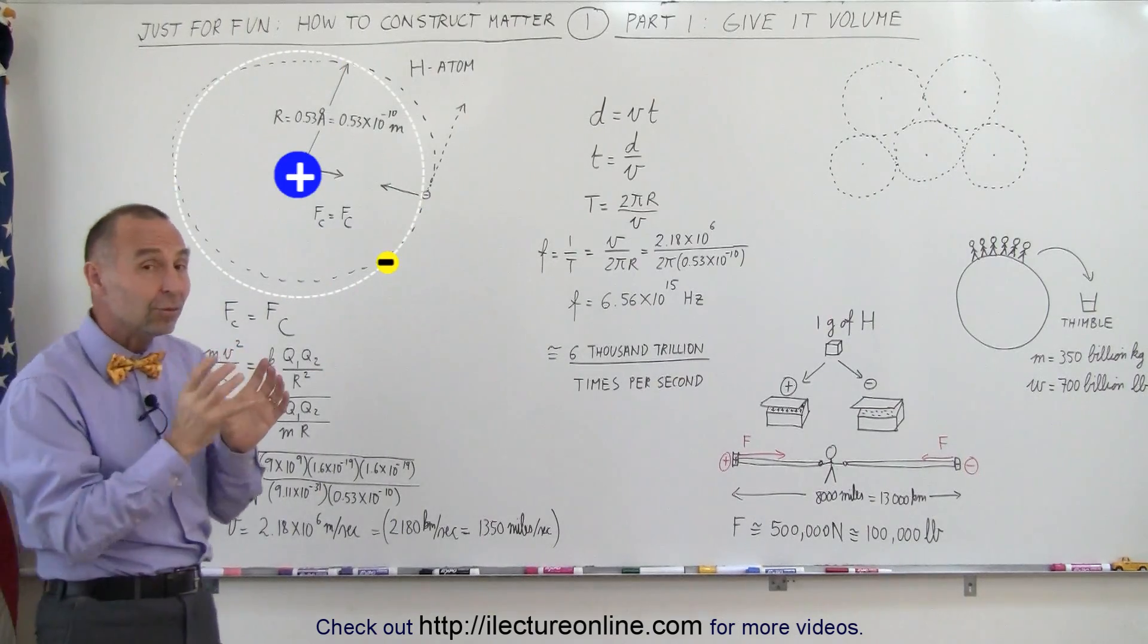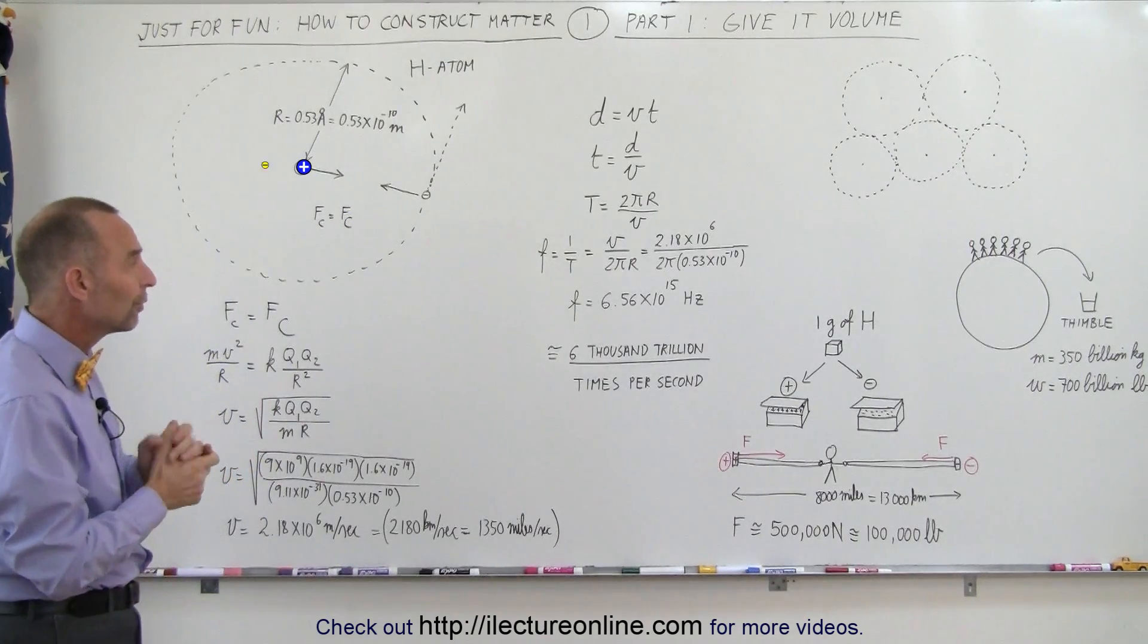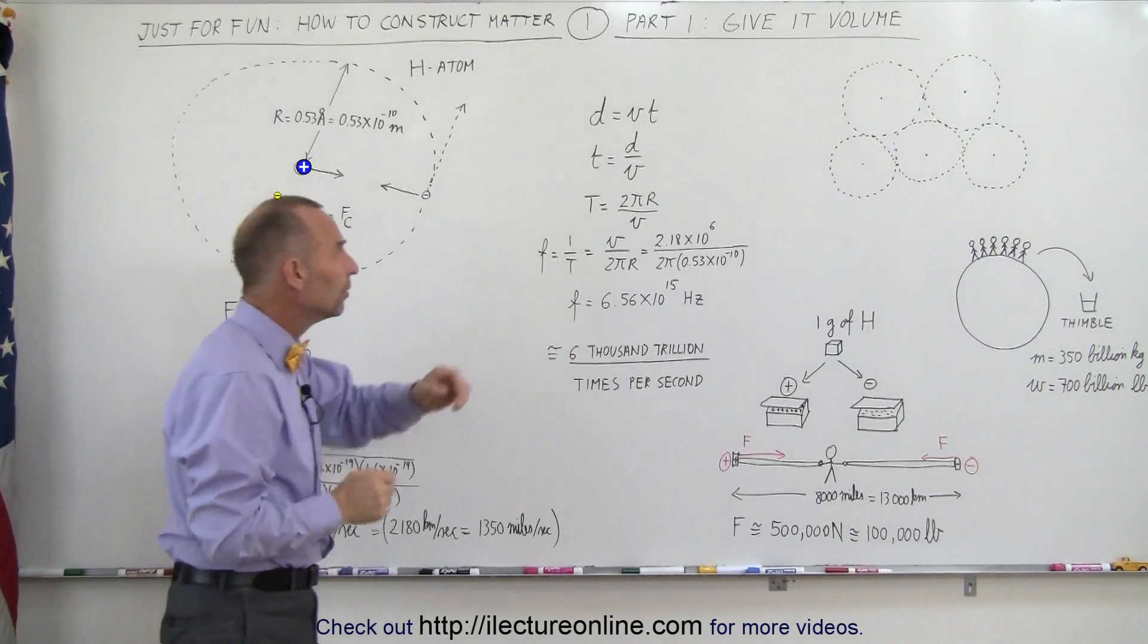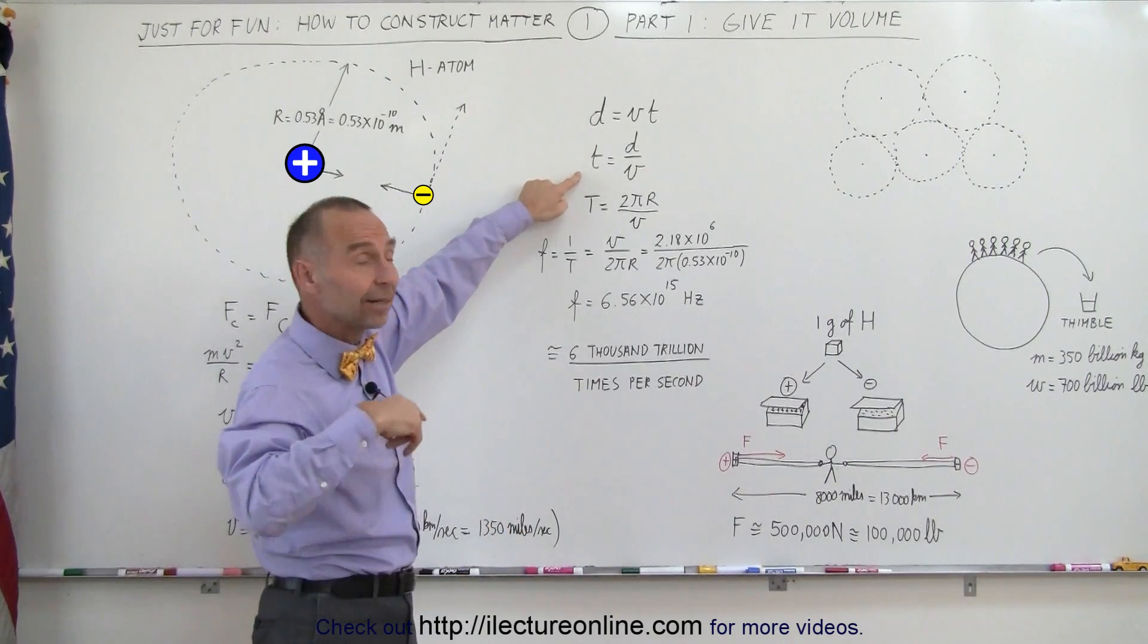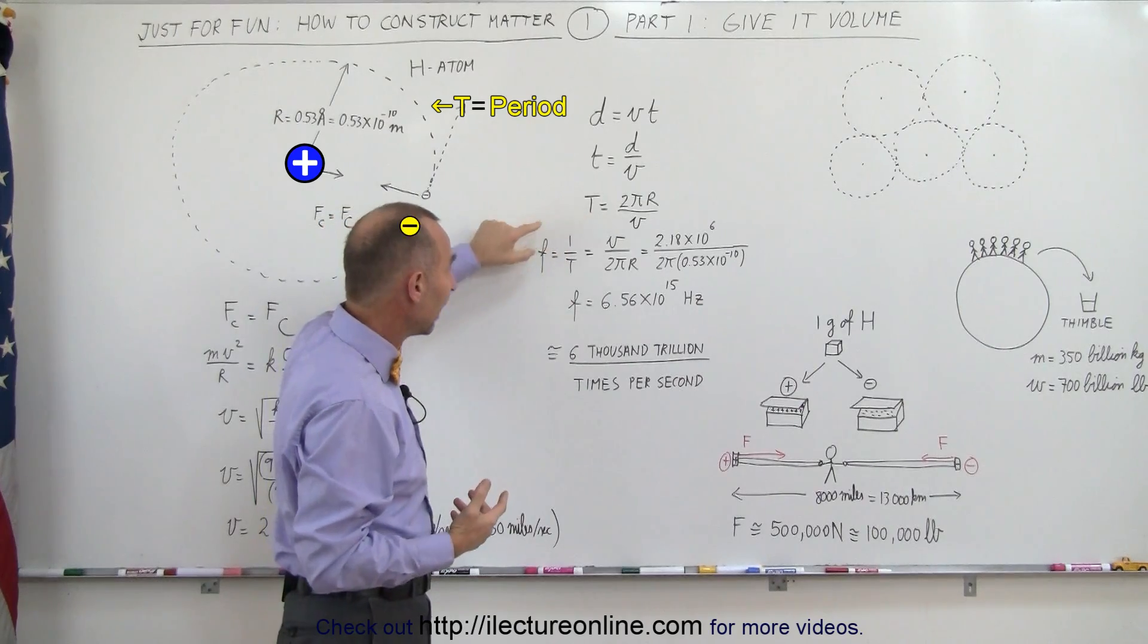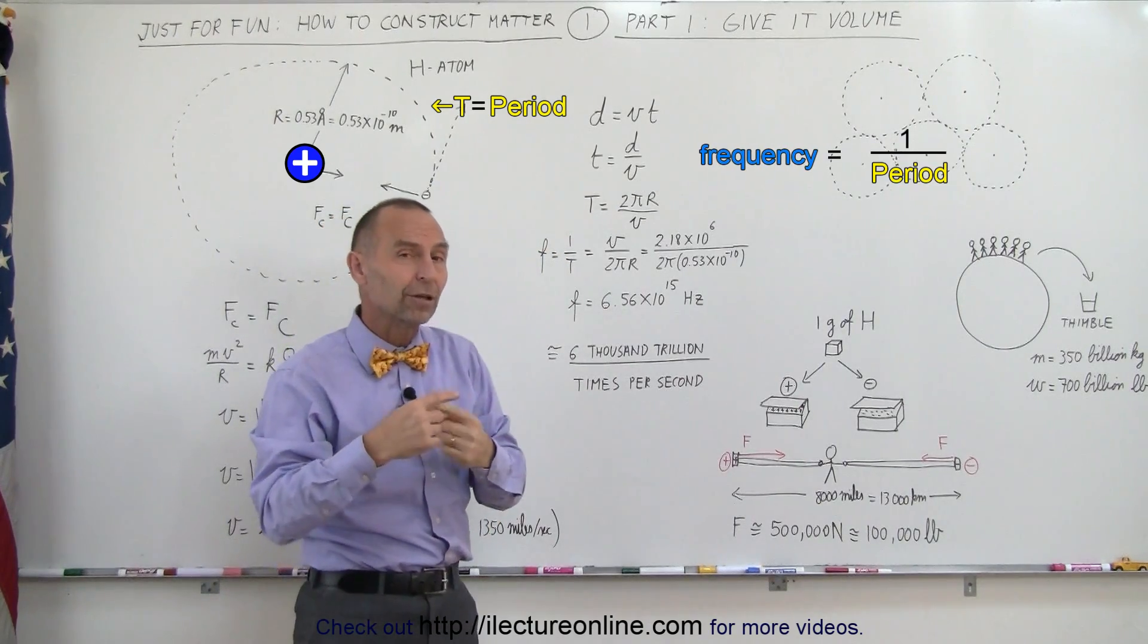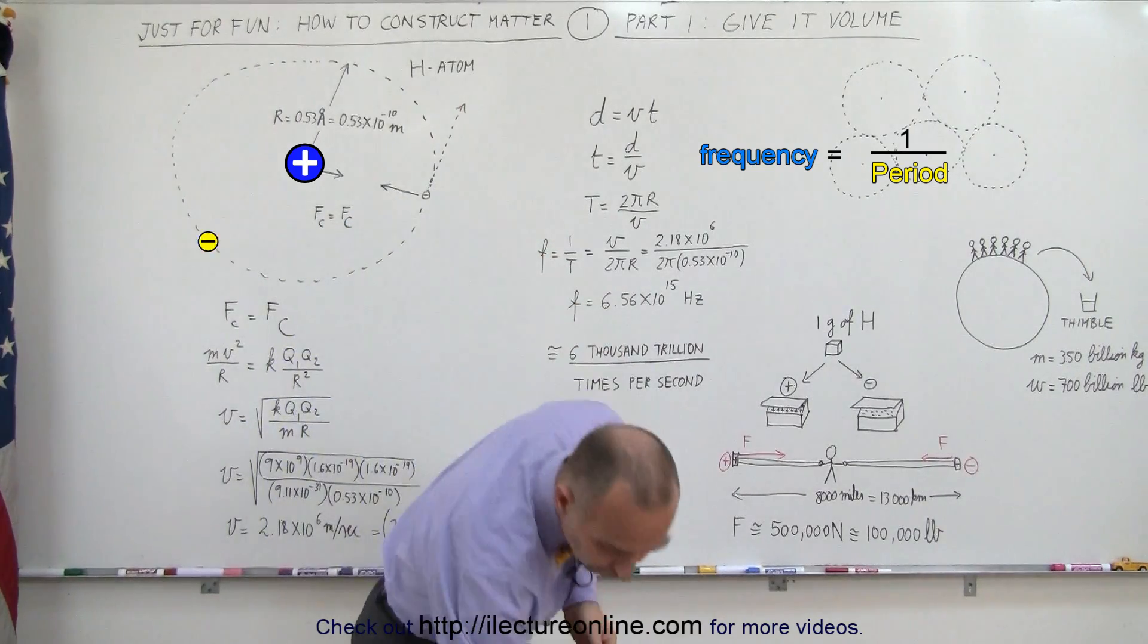The atom is rather small, so it must go around the atom quite a number of times. If we take a look at this equation, distance equals velocity times time, we solve for the time that it takes the electron to make one trip around the nucleus. That is called the period. And if we take the frequency, which is the inverse of the period, then we calculate the number of times per second an electron goes around the nucleus.